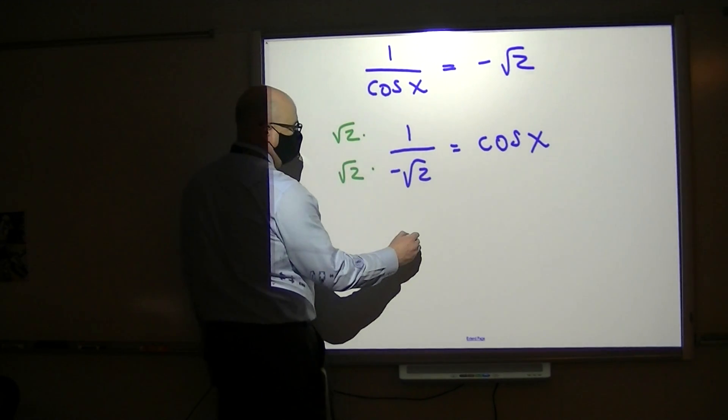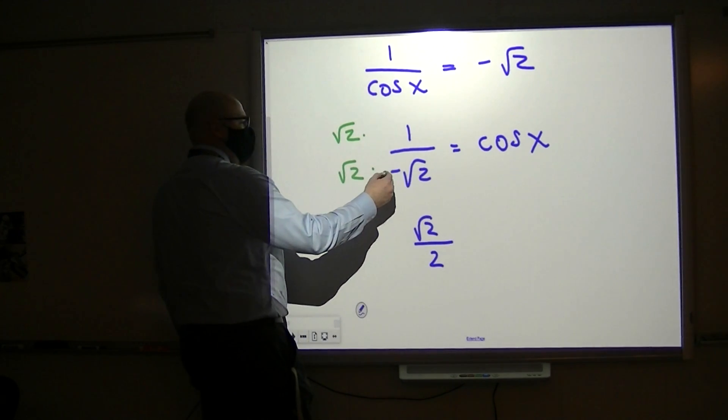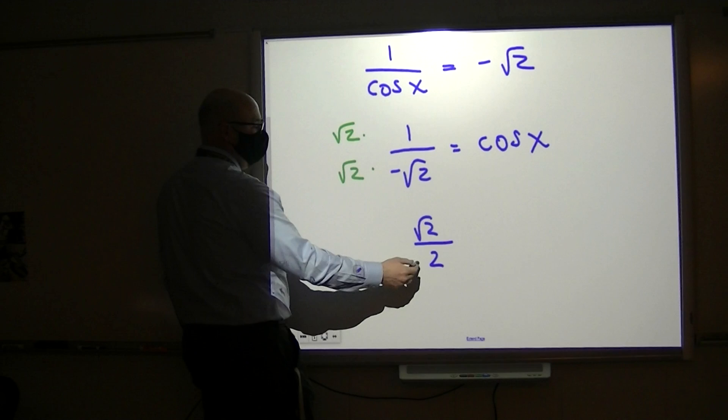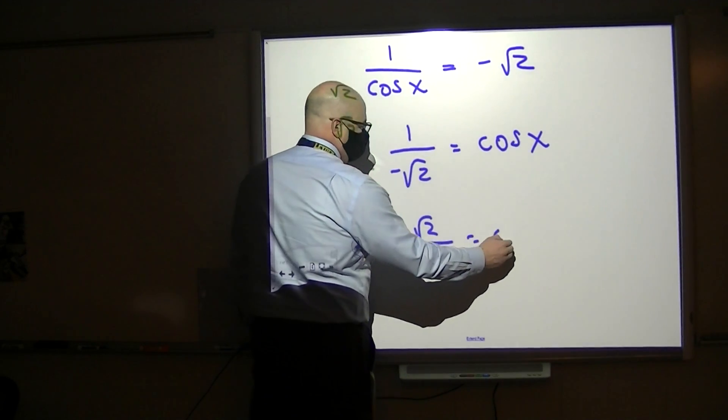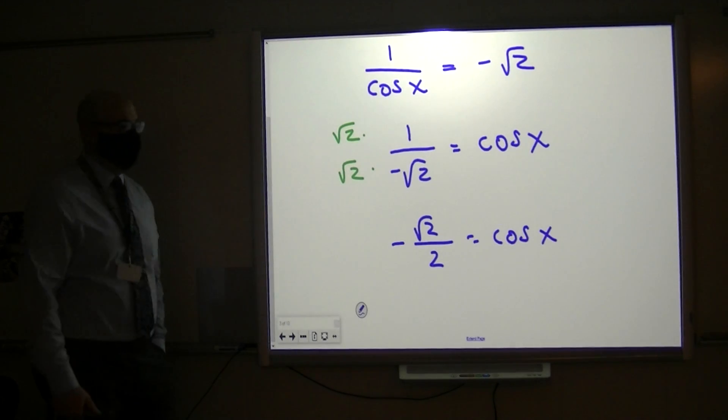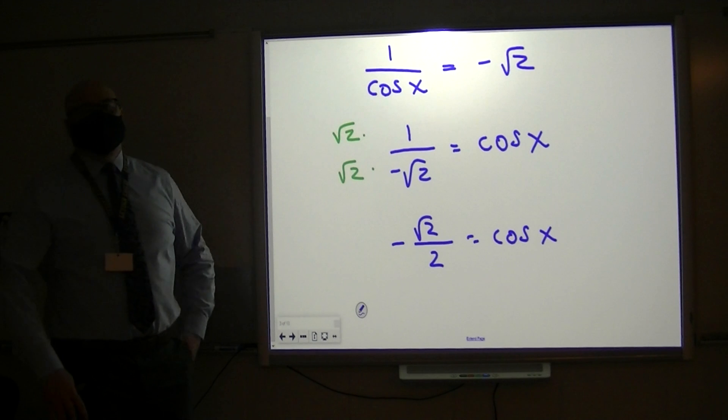And we end up with radical 2 on top. On the bottom we have 2. The negative that's in the fraction, you'll recall, can go in the denominator, it can go in the numerator, it can go in front. Doesn't matter. Okay, so we have this. That fits a little bit better. That's something that we're used to.